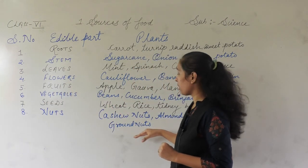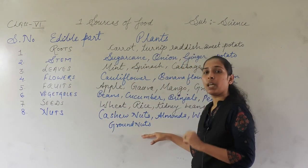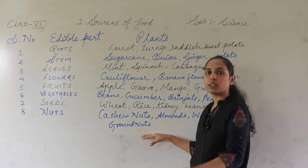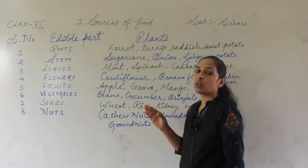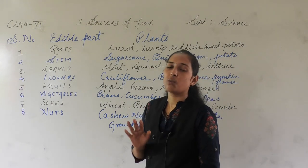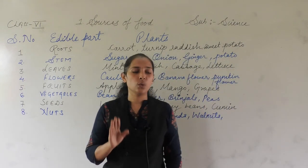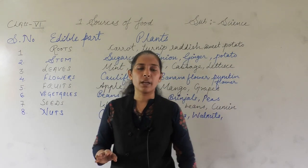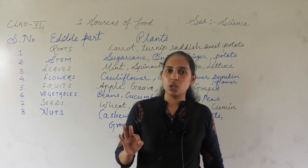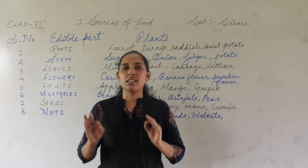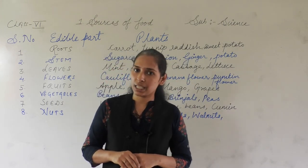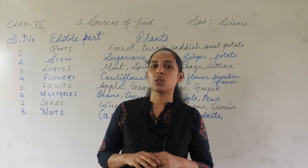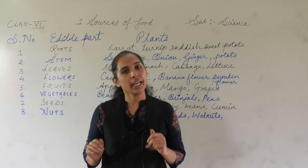So this is all for today. We have discussed the different edible parts of a plant and also the different examples of each particular edible part. Today's homework is to perform activity number 3 from your science textbook, page number 6. Thank you, I will end my class for today.